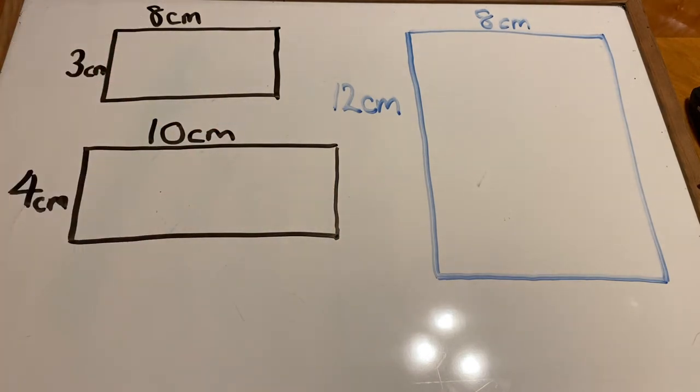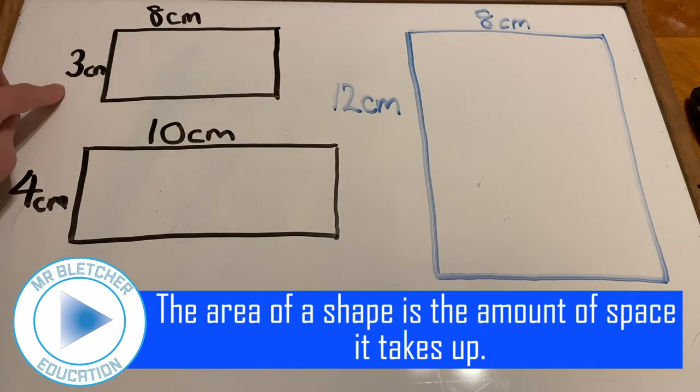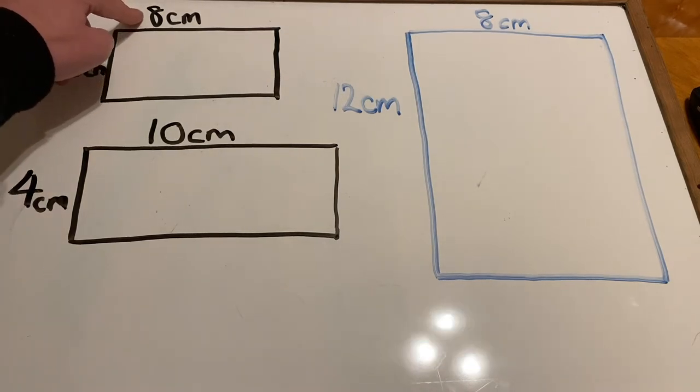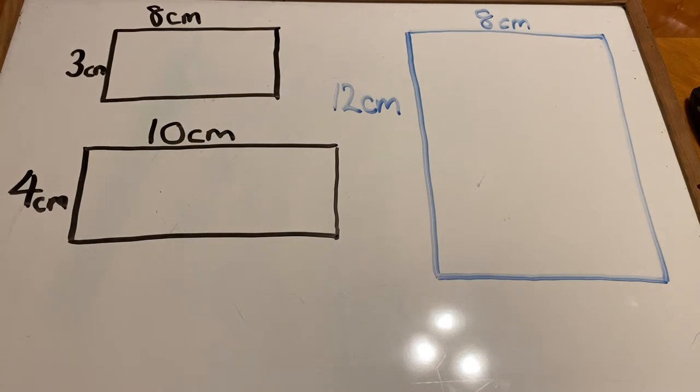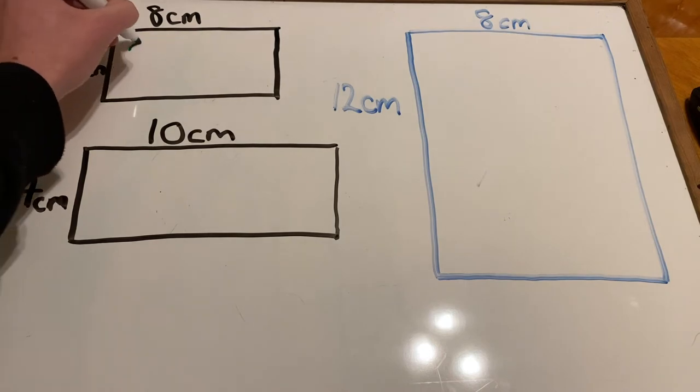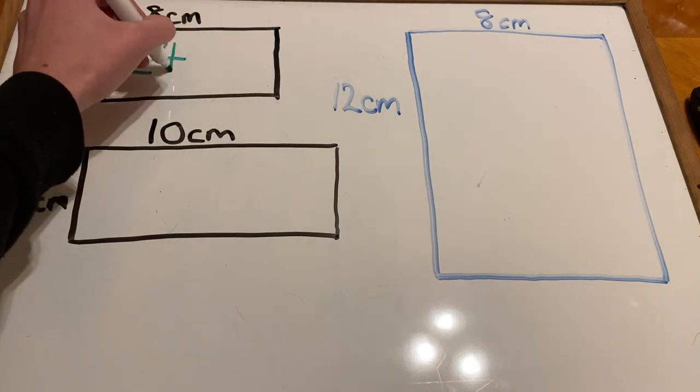So, let's start with this one. The width of the rectangle is 3cm and the length of the rectangle is 8cm. So, to work out the area, all we have to do is 3 multiplied by 8, and we know that is 24. So, 24cm.